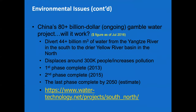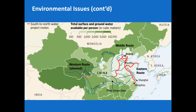There is an 80-billion-plus-dollar ongoing gamble called the North-South Water Diversion Project. Two phases have been completed — the first in 2013, the second in 2015 — and the last phase is estimated to be completed by 2050. The goal is to divert water from the far wetter south into the far drier north, addressing water needs for cities like Hangzhou, Shanghai, and Beijing.